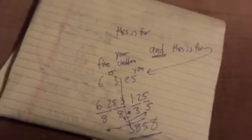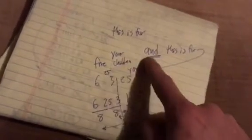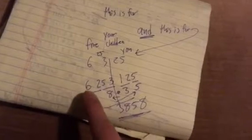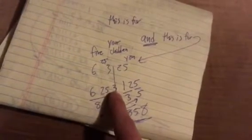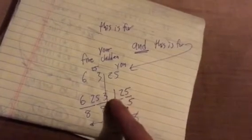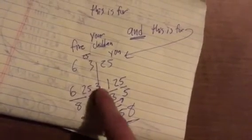Indiana Jones - whatever that lady says: 'this is for fire, this is for your children, and this is for you.' So if you take fire as F, your children is 25/3, and you is 125. If you look at it: 6 and 2 is 8, 3, 5, and 3 is 8, 1 and 2 is 3, and then 5 is left over.